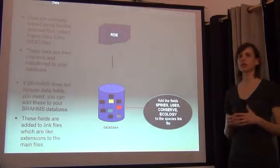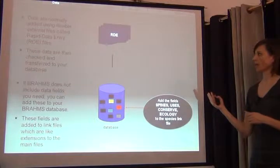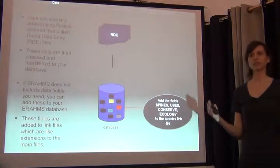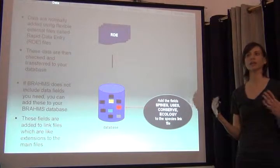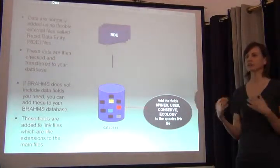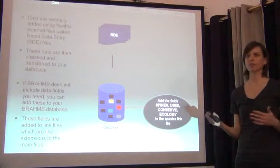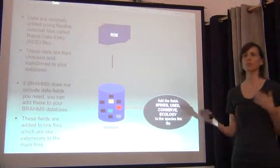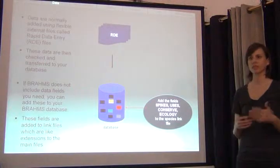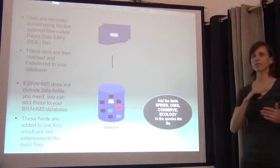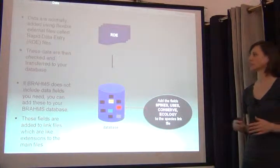Brahms uses a simple format in that you can use rapid data entry files to do most of your work, which actually looks like an Excel spreadsheet. You can take a sample of your dataset into the field, enter a lot of information, and when you come back you can load it to the main database and it will check against the authority files and look for errors. It really is a mobile system — you can use it in the field and then bring it back to be centralized.